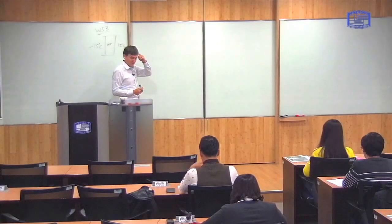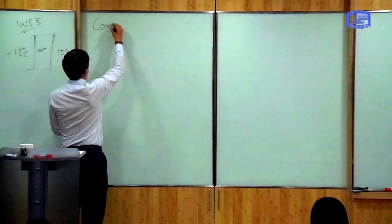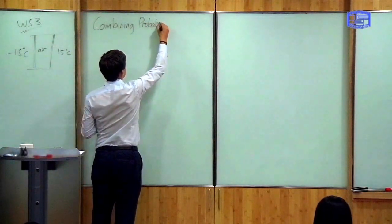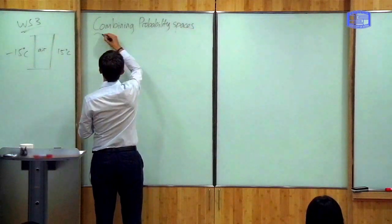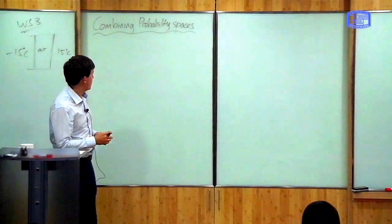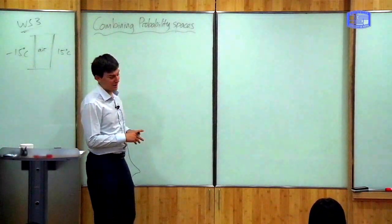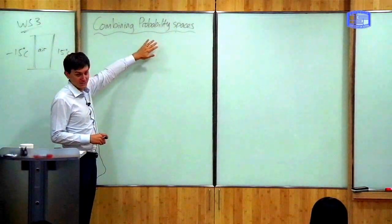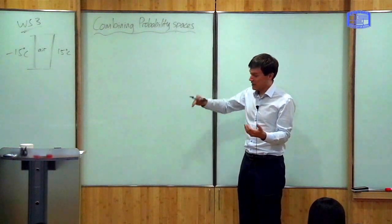I'm going to continue to develop the probability theory we were doing last time, and the first topic I want to talk about is combining probability spaces. We saw last time how to define a probability space. For example, if I roll a dice, I get a number between 1 and 6, and the probability of each event is 1 over 6. So instead of throwing one dice, I throw two dice.